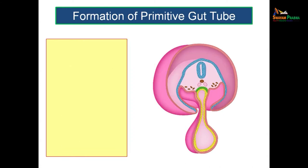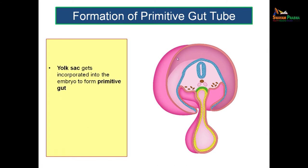First we will see the formation of the primitive gut tube. This is actually a coronal section where you can see the amniotic cavity in the upper aspect and the yolk sac in the lower aspect. In the upper aspect we have the ectoderm and in the lower aspect you have the endoderm. What is going to happen is this yolk sac is going to get incorporated into the embryonic disc to form the primitive gut.